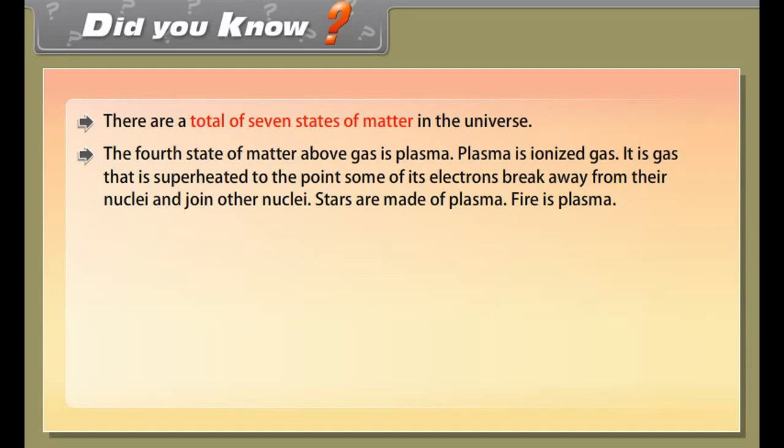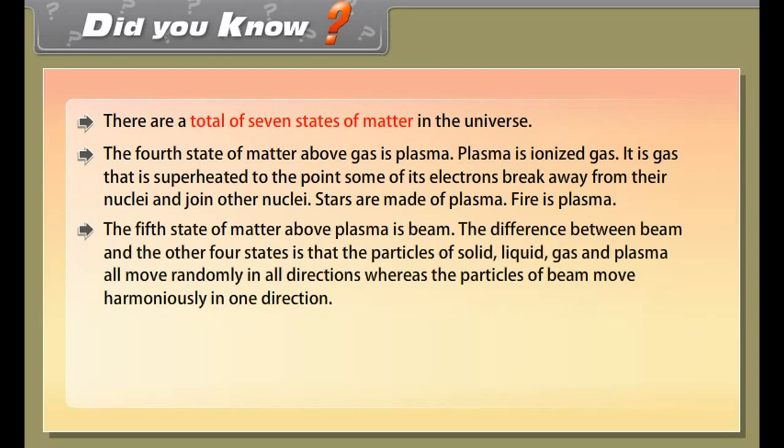Did you know there are a total of seven states of matter in the universe? The fourth state of matter above gas is plasma. Plasma is ionized gas that is superheated to the point some of its electrons break away from their nuclei and join other nuclei. Stars are made of plasma. Fire is plasma.